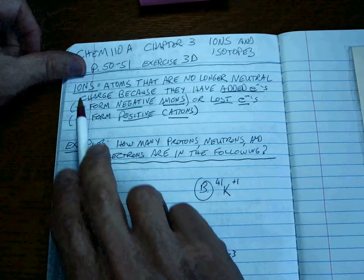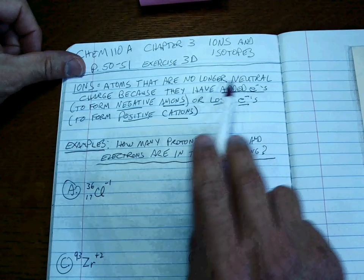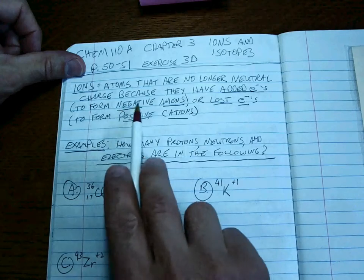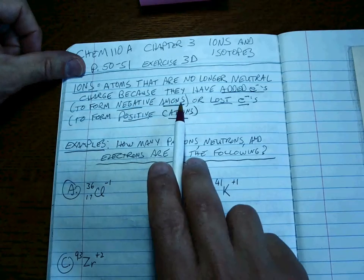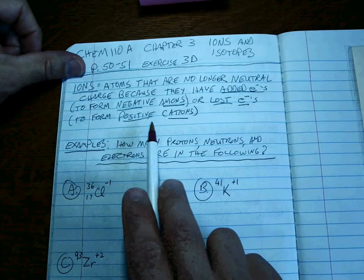So what's the definition of an ion? An ion is an atom that is no longer neutral because they either add electrons to form a negatively charged anion, or they lose electrons to form a positively charged cation.